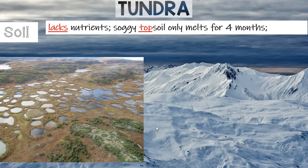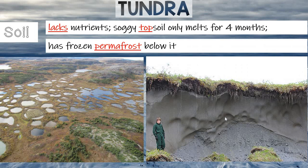The soil in the tundra, when you can see it, is very soggy. For six to eight months it's pretty much covered in ice, and for that short summertime when the soil actually melts, it is very soggy. That's because underneath it there's a frozen layer of soil that never really defrosts, called the permafrost. The top layer is the topsoil, and it stays soggy because that liquid, as it melts, can't seep into the layer below — the permafrost — which is permanently frozen. As a result, the soil really doesn't have a lot of nutrients or fertile soil, and there's not a whole lot of plant life that grows on it.